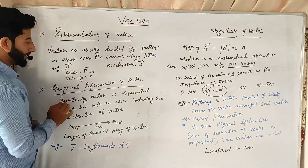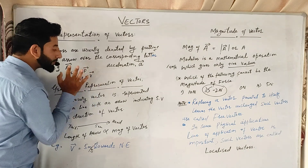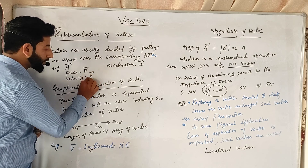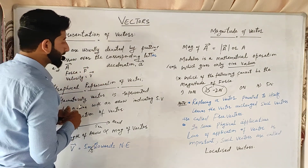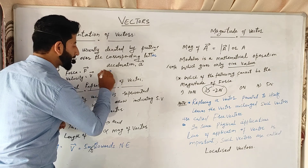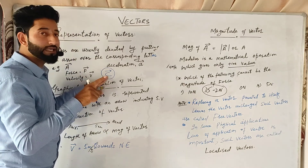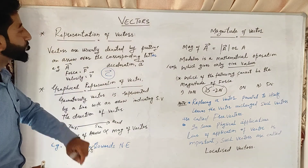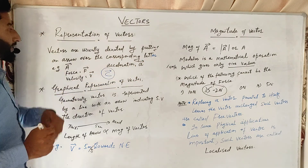Similarly, we have velocity. Velocity we denote as V. We know that it is a vector quantity — it represents a vector quantity. So vectors are usually denoted by putting an arrow over the corresponding letter.